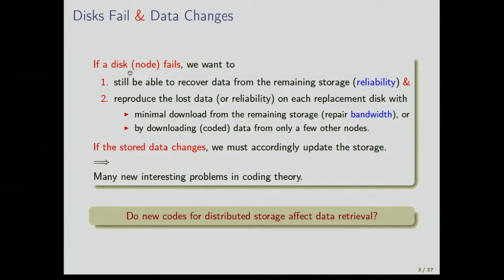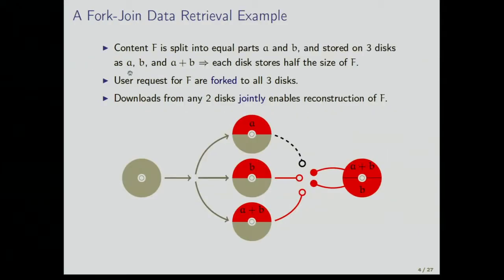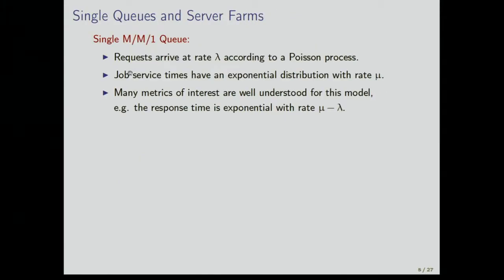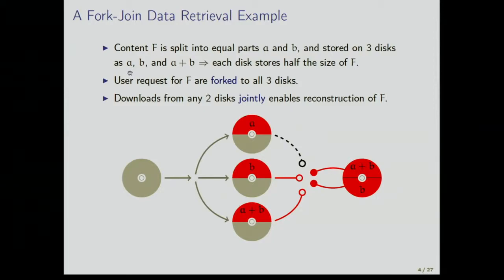So what I want to look into is: do new codes for distributed storage affect data retrieval? There are two parts to this talk. The first is something like this: suppose you have a code A, B, and A plus B — redundancy where any two of these are sufficient for recovery. A request comes in, and if A plus B and B are the first fetched, you're in business. But now you have some arrival model to this system.